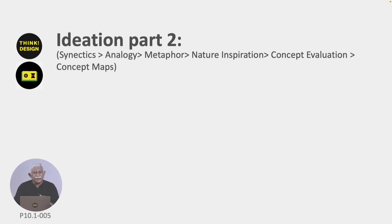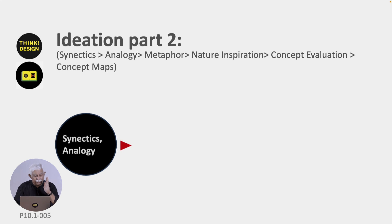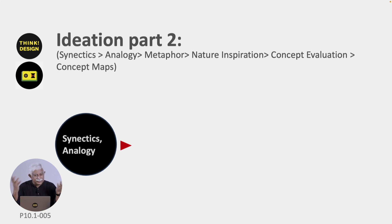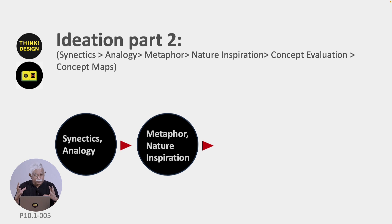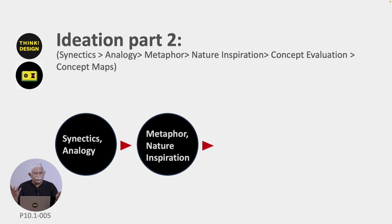Looking at ideation part 2, the project part of it, you think of ideation through synectics. First, make use of analogies — we talked about three analogies: personal analogy, direct analogy, and fantasy analogy. We also looked at metaphors — very nice metaphors to think of, either from the man-made world or from the natural world — and actually looking at nature for inspiration. These are the different techniques that you can use.